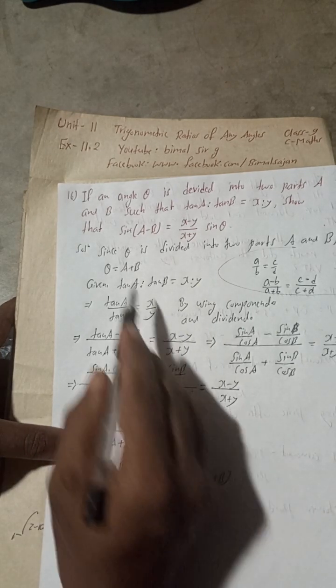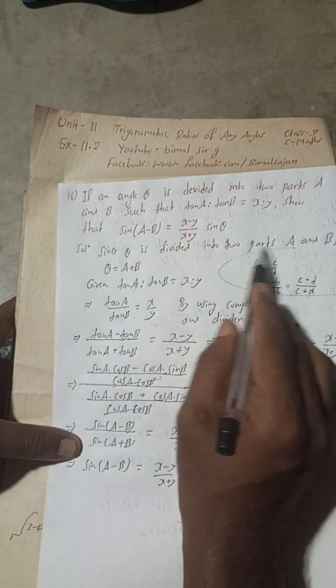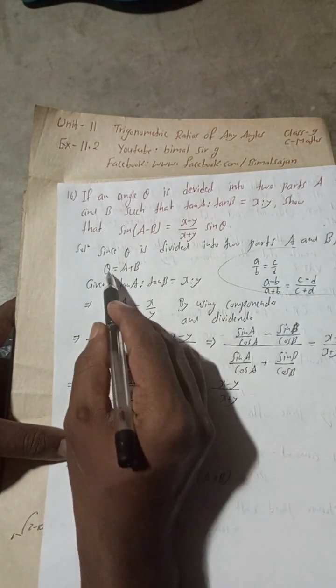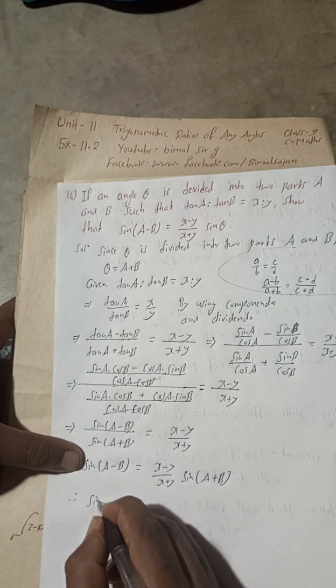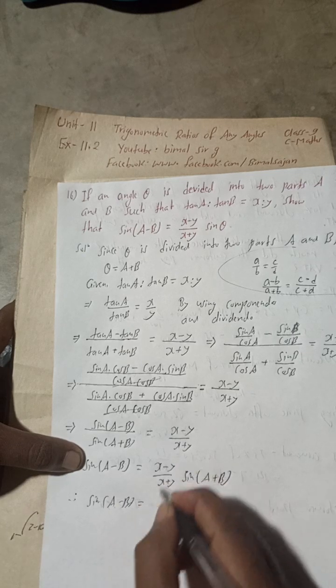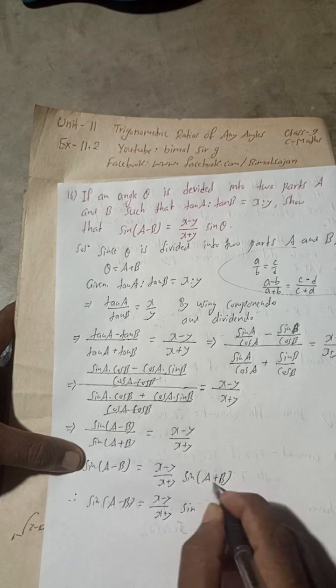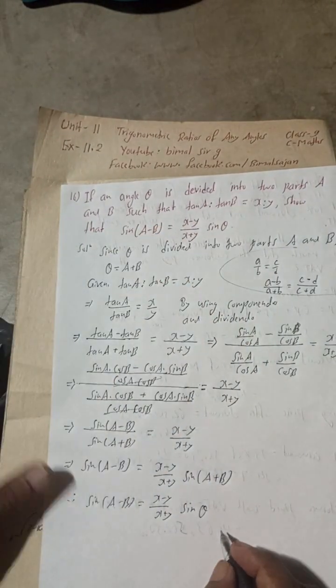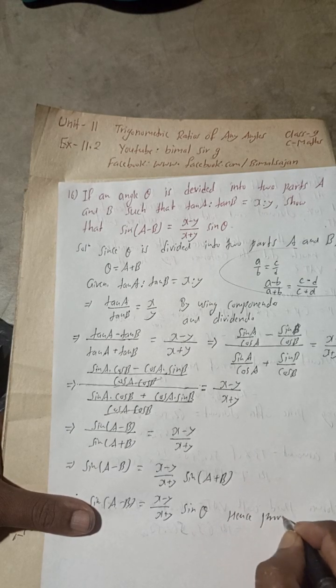Now, what we have supposed here? There is given that theta is divided into two parts A and B. That means theta equals A plus B. In place of A plus B, we can put theta. So therefore, sin(A-B) equals (X-Y)/(X+Y) sin theta. And A plus B equals theta. So see there, this is our hence proved.